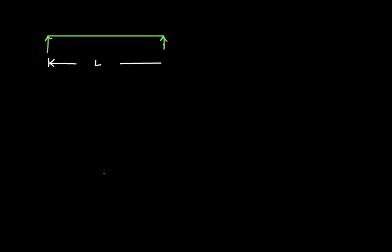So this is our simply supported beam, of length L — its unit can be in meters — and a moment of inertia I, with units in meter raised to the power 4. In drawing the shear force diagram and bending moment diagram, we will not be using the moment of inertia. The beam is made of a material that has an elastic modulus value of magnitude capital E, whose unit can be Newton per meter square, gigapascal, or megapascal, whichever is convenient for you.